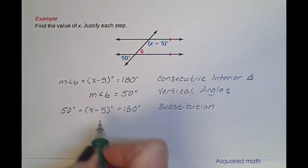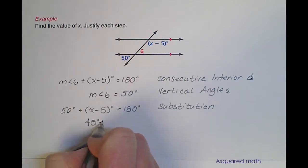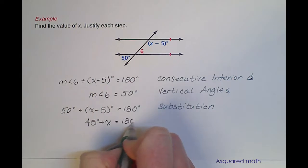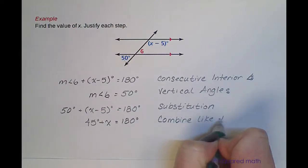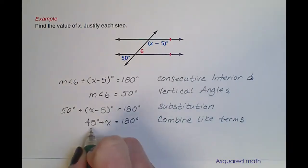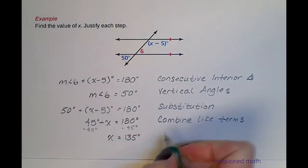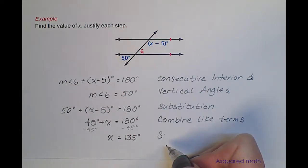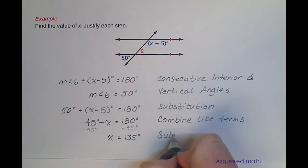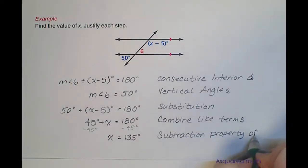Now we combine all like terms: 50 minus 5 gives us 45, so we have 45 degrees plus x equals 180 degrees — and all we did was combine like terms. Last but not least, if we subtract 45 degrees from both sides, we are left with x equals 135 degrees. The justification for that goes back to Algebra 1: the subtraction property of equality.